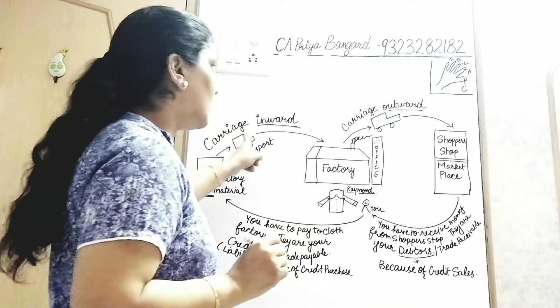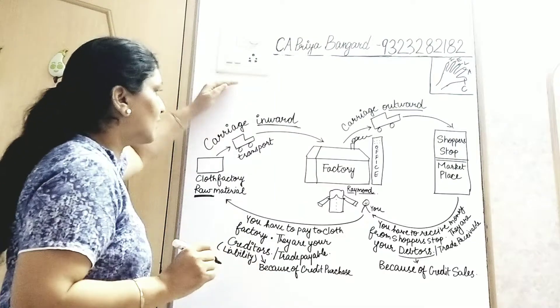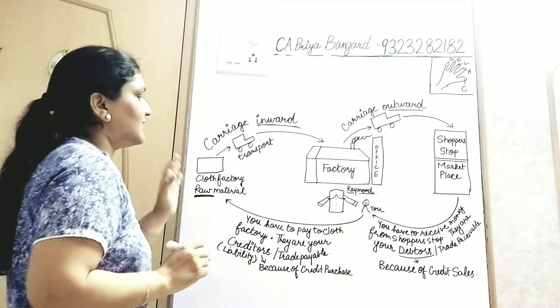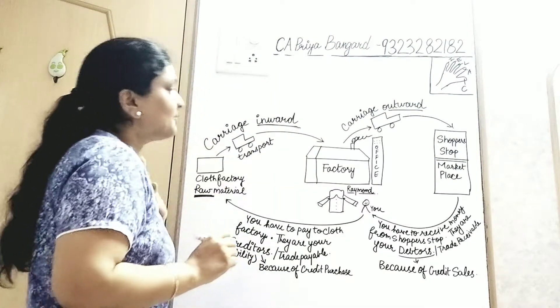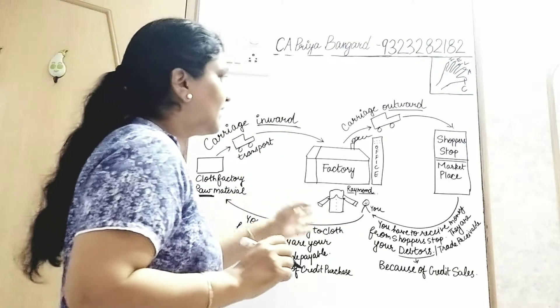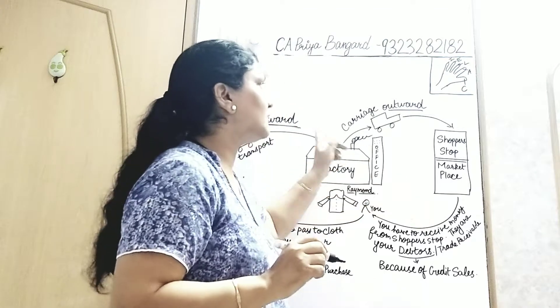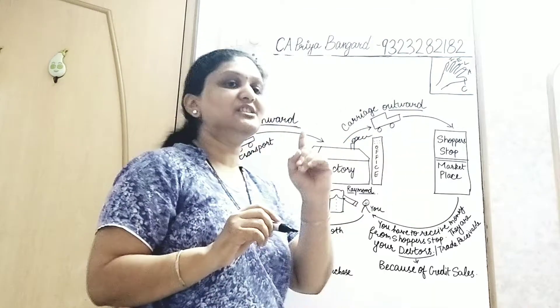Remember, both carriage inward and carriage outward are expenses, but carriage inward is direct expense - it is for converting raw material into finished product. When finished product is taken to final marketplace, that transportation is called carriage outward.